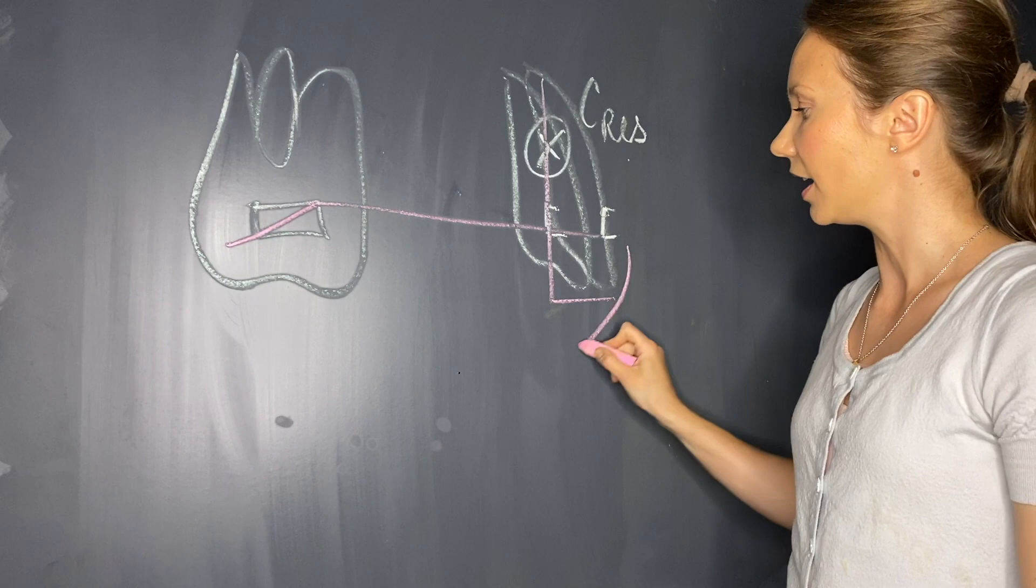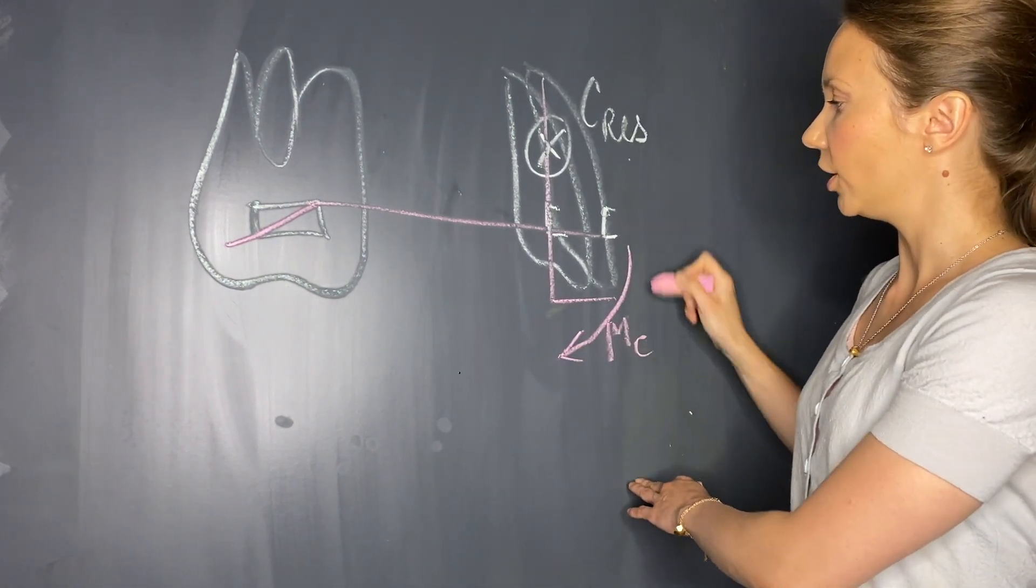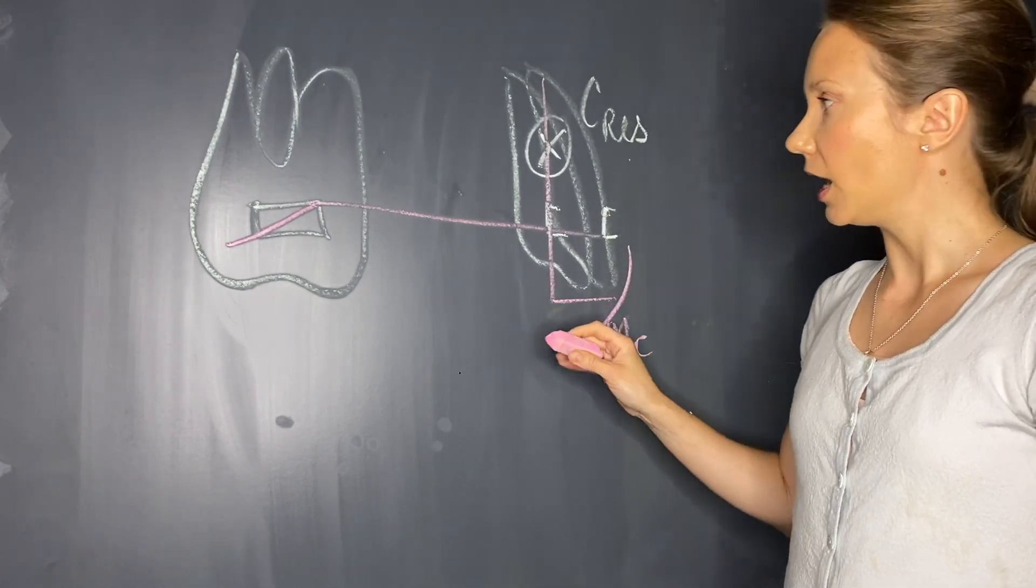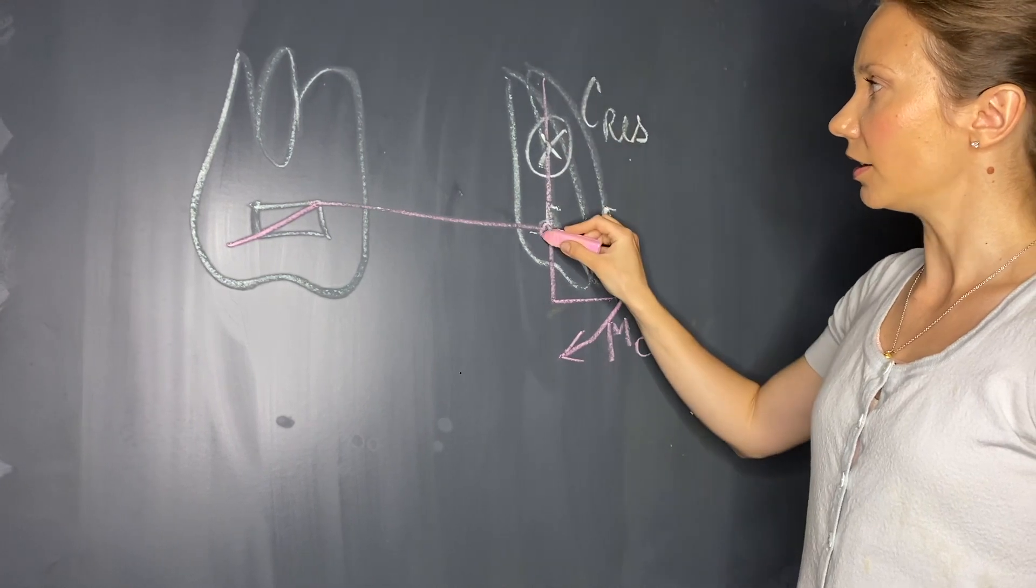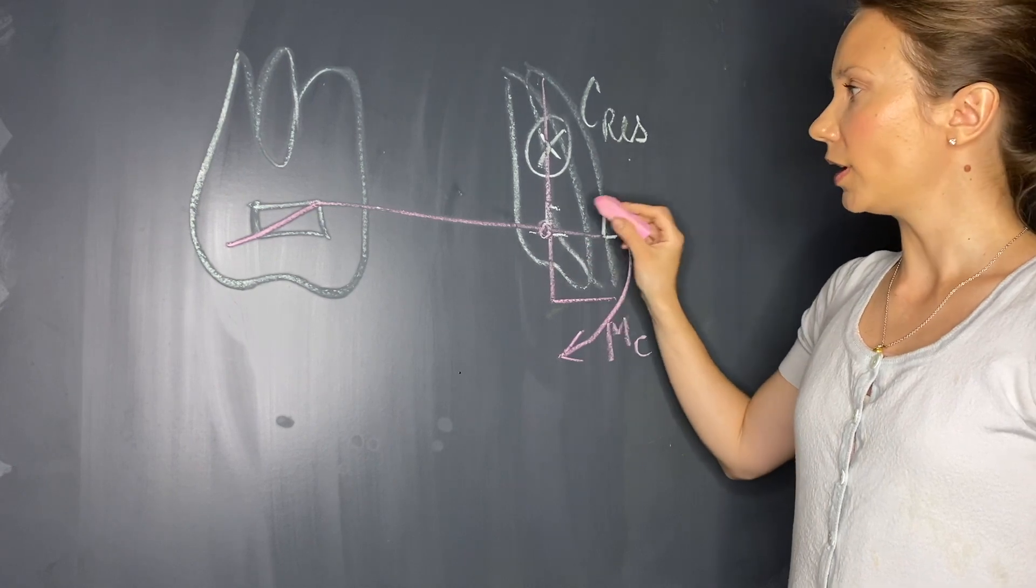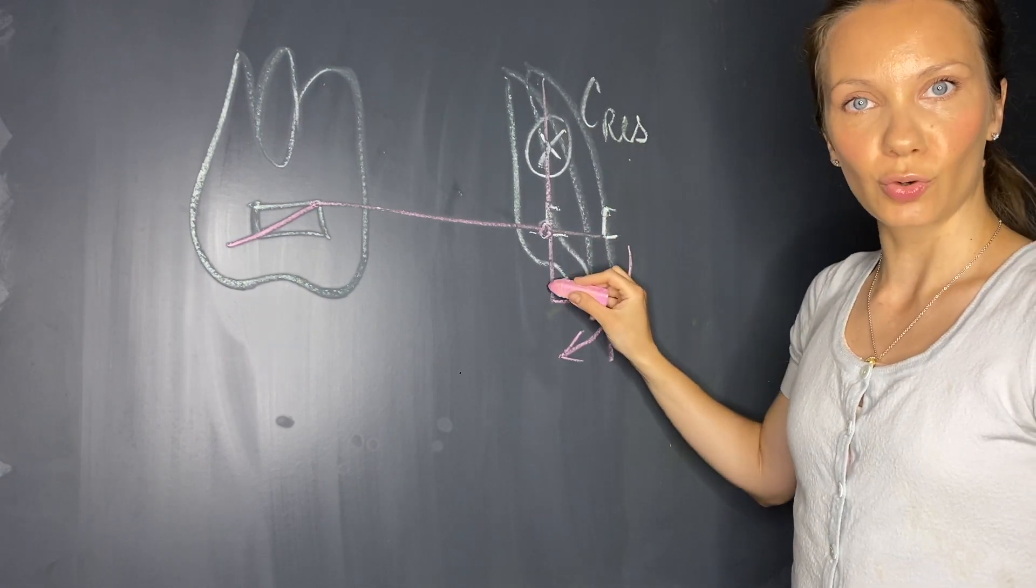If we tie up this extrusion arch exactly underneath the center of resistance at a very close distance, it's going to produce a very pure extrusion.